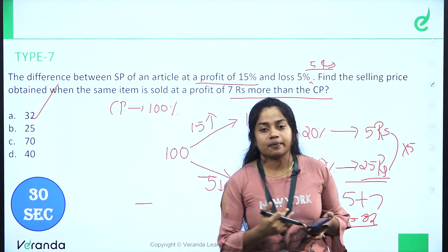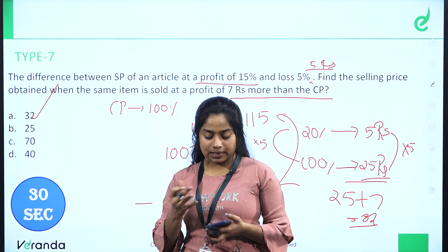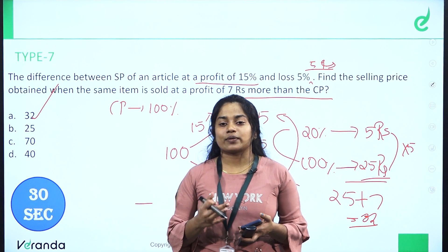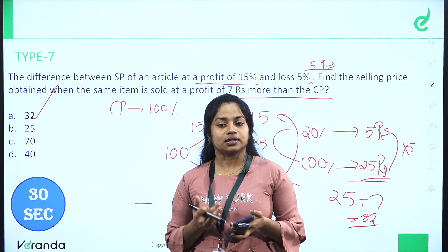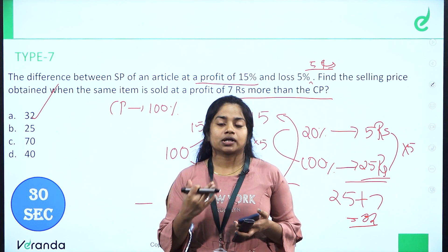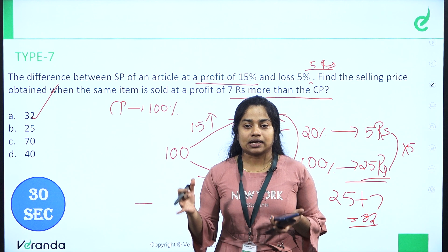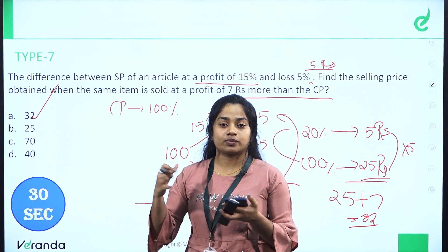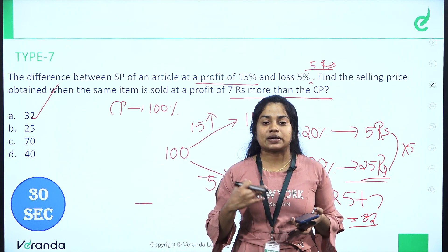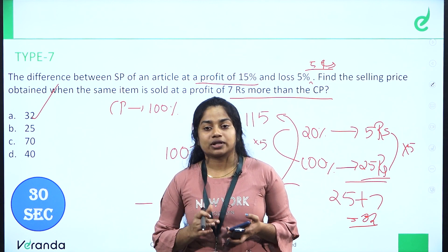So the Cost Price is 25 rupees. If we add 7 rupees to the Cost Price, then we need the Selling Price which is about 25 + 7 = 32 rupees. If you have a speedy question, we will be able to answer it.